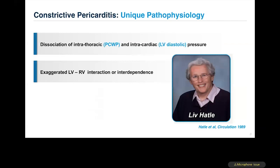Levin Hatle provided insight into unique features of constrictive pericarditis that helped us understand the hemodynamic changes. Two characteristic features include: first, dissociation of the intrathoracic and intracardiac pressure; and second, exaggeration of LV and RV interaction — or interventricular interdependence.